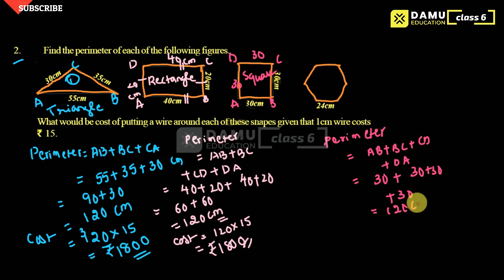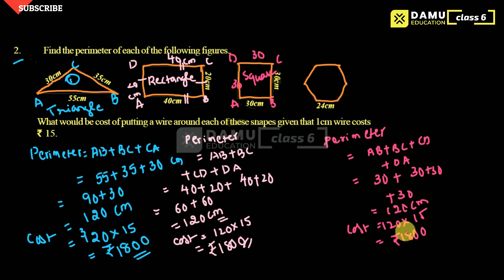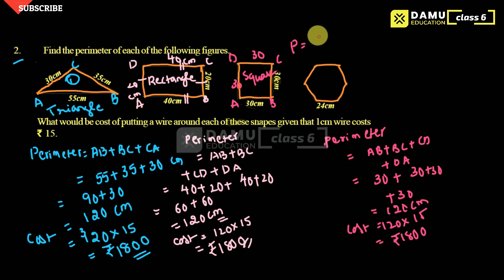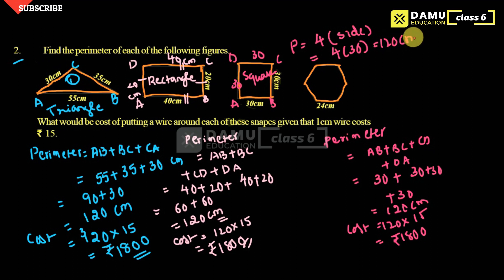The cost for the square is also 120 into 15, giving 1800 rupees. For a square, since all sides are equal, you can write the perimeter as 4 into any side length. So 4 into 30 equals 120 centimeters.